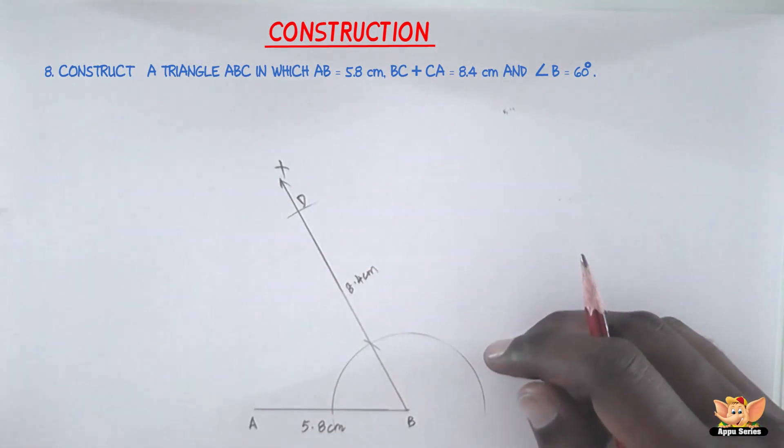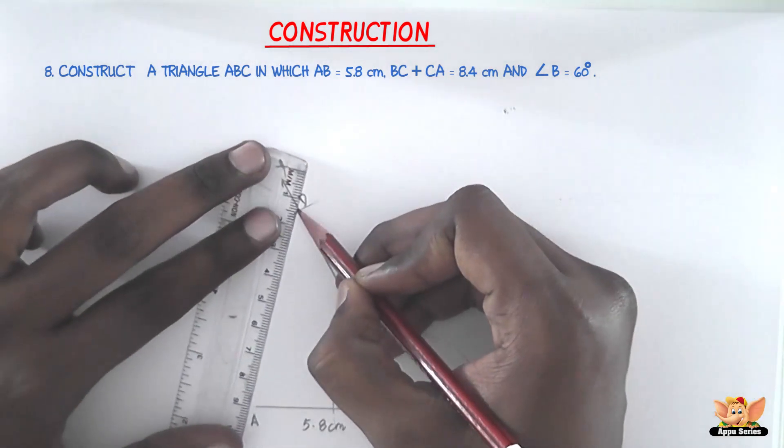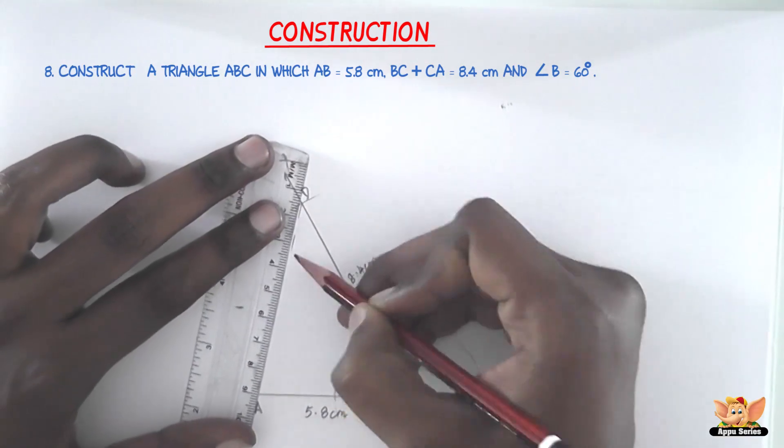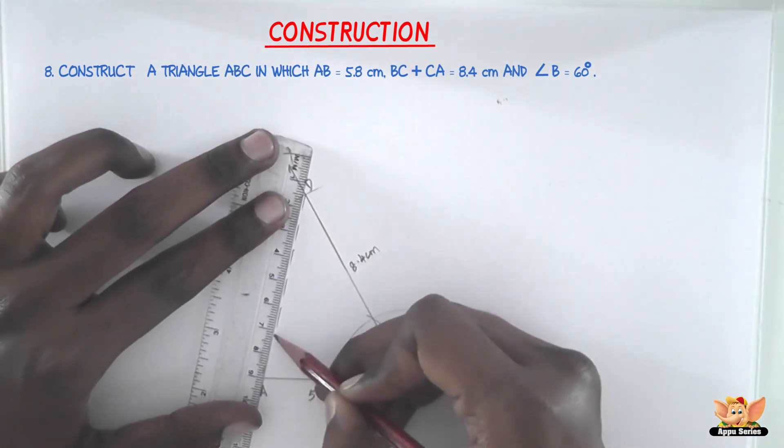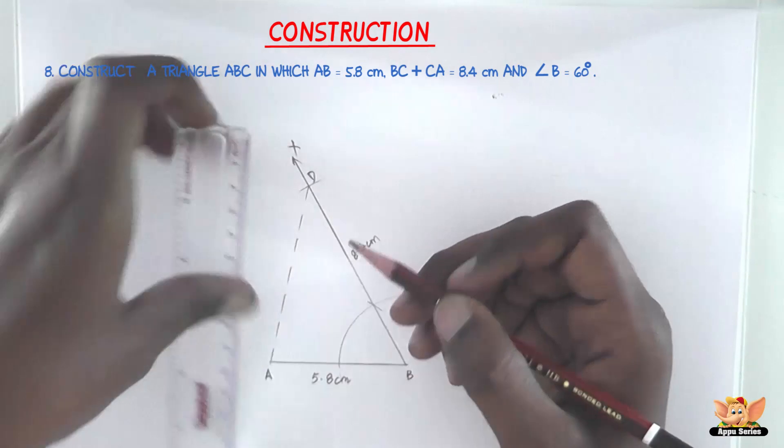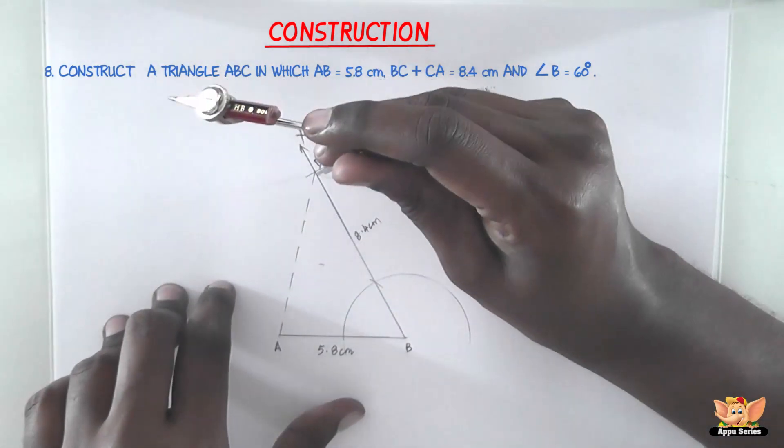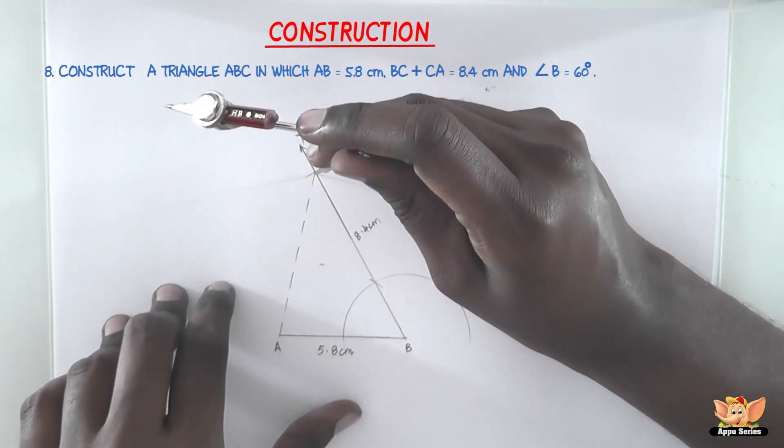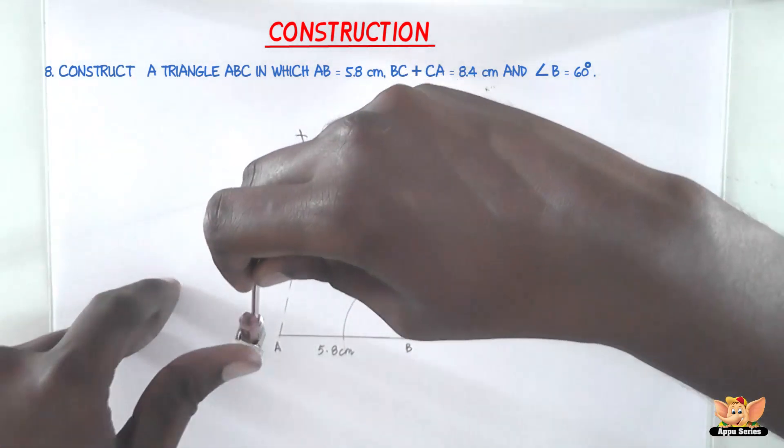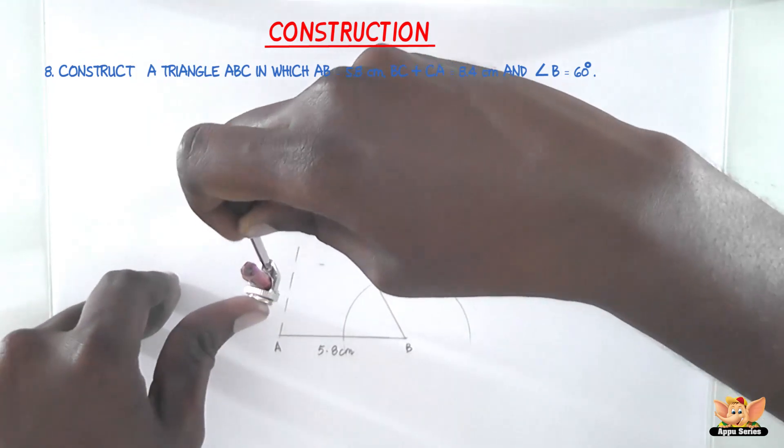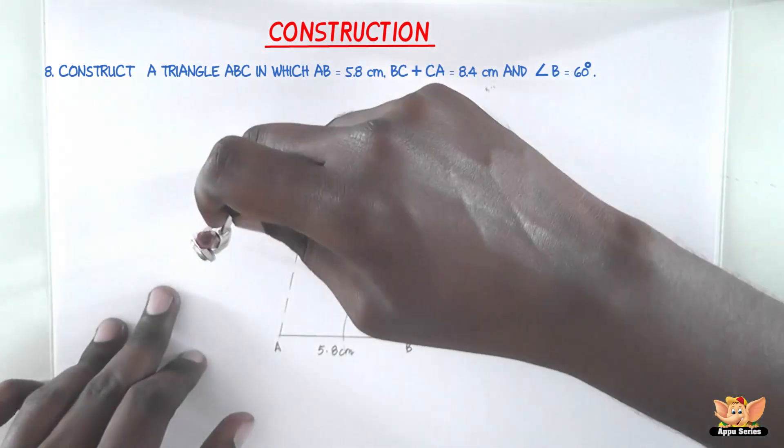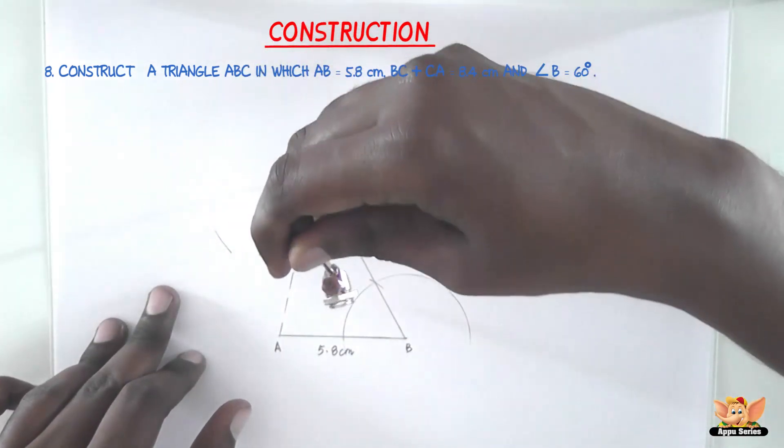What's the next step? Join AD in dotted lines. Now we need to draw the perpendicular bisector of line AD. Keep the compass at D and measure more than half the length of AD. Draw an arc on either side of AD.